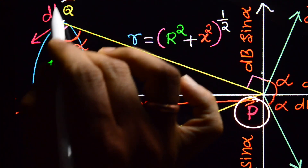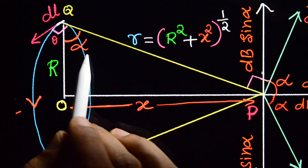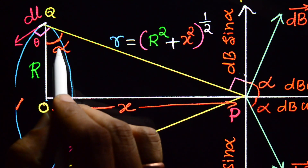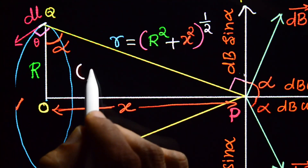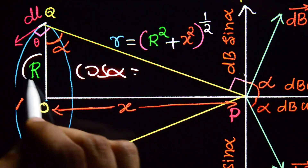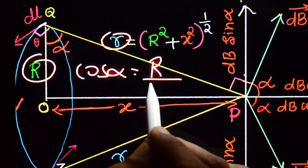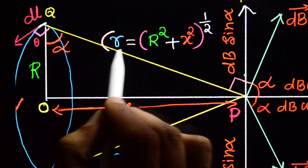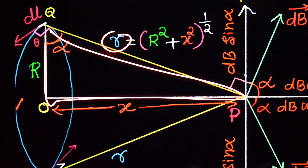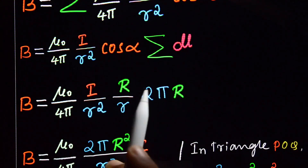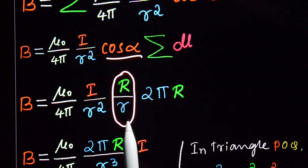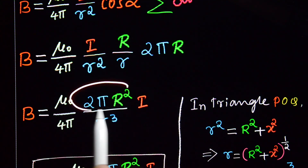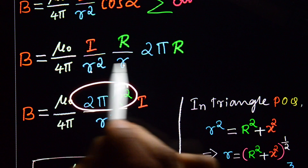From the triangle POQ, we can show geometrically that the angle at PQO is also alpha. In this right-angle triangle, cos(alpha) = base/hypotenuse = R/r (capital R divided by small r). Substituting cos(alpha) = R/r gives R multiplied by R = R², and with the 2πR already there, we get 2πR² divided by r³.